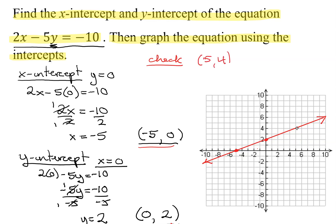So what we're going to do is plug those numbers into our equation to see if we get a true statement. So 2 times 5, which is the x value, minus 5 times the y value, which is 4. Does that equal negative 10?